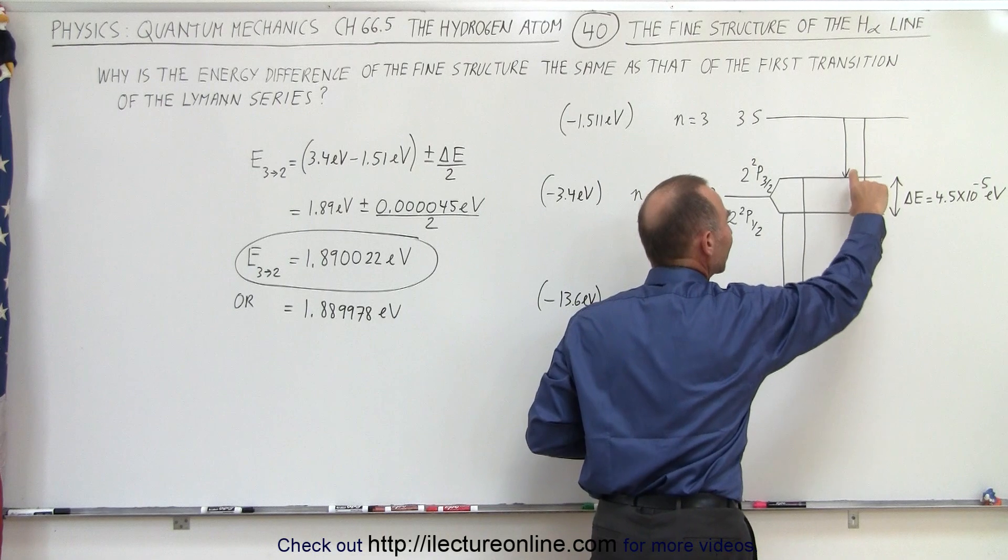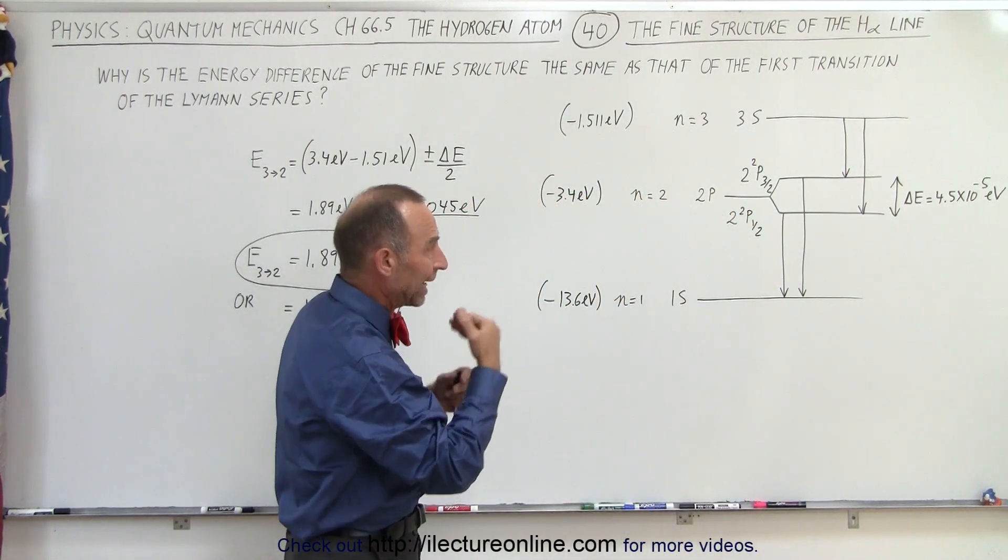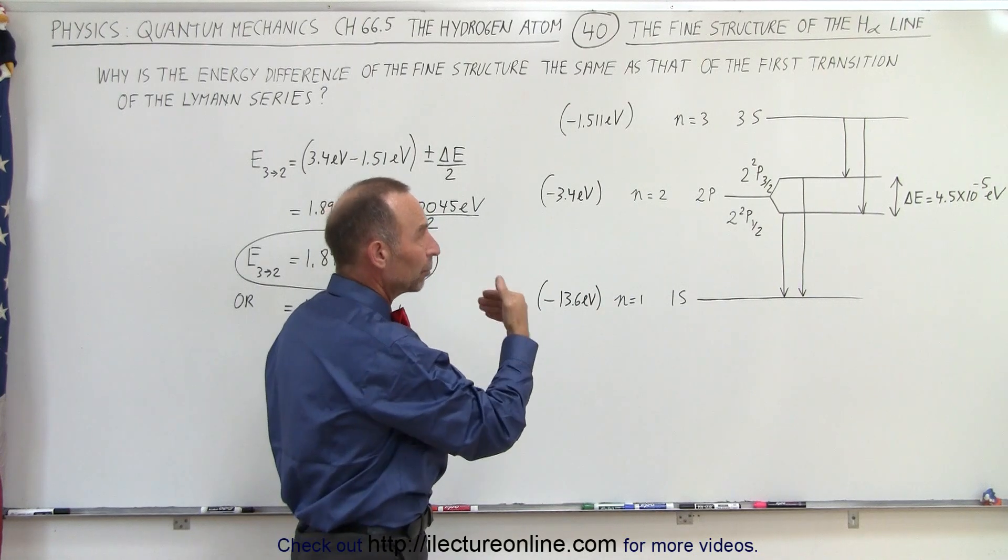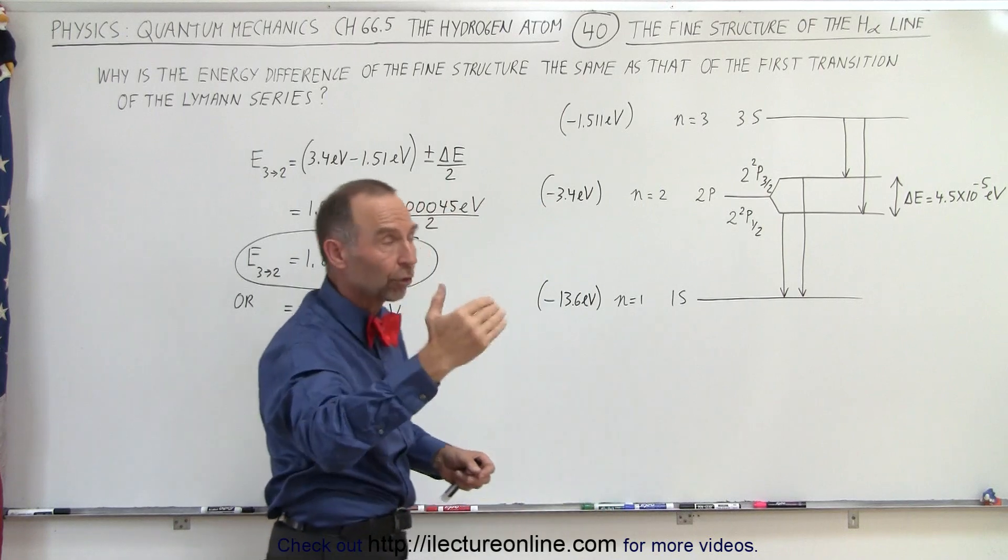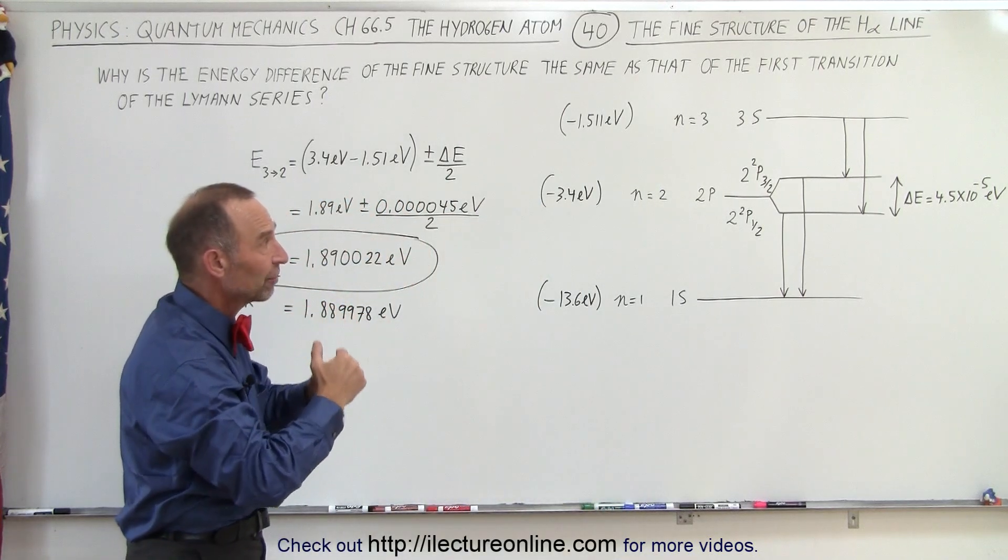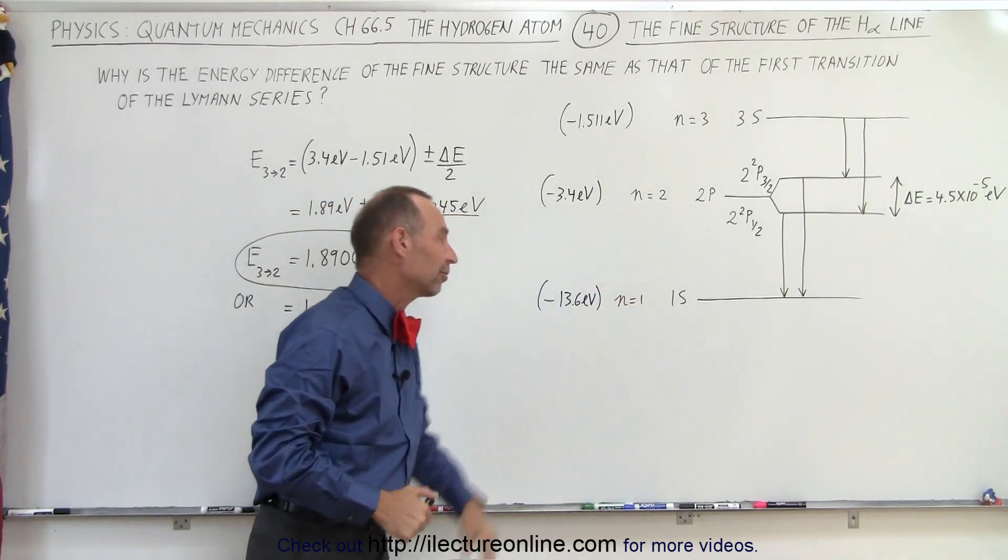You can see it has the exact same energy difference and therefore the fine structure energy difference for the Balmer jump for the H-alpha line which means the first jump from the third level down to the second level, that energy difference is exactly the same as it is for the first Lyman jump from the second level down to the first level.